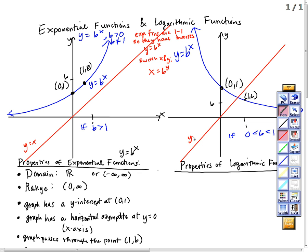We know that if we graph two inverses, they have symmetry about the line y equal x. We also know that when looking at the equations, we switch the x and y when solving algebraically, and we also switch the points.